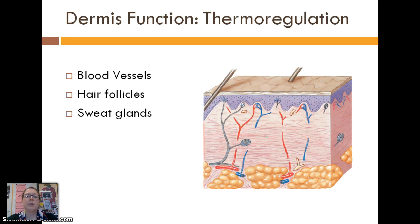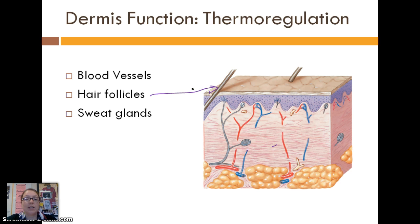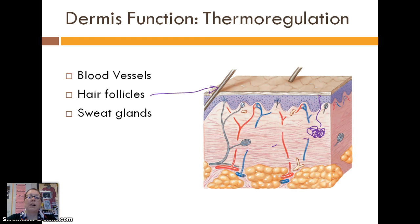The next function of the dermis is thermal regulation, and there are three structures that relate to this. The first, which should be fairly obvious, are hair follicles — they help to thermally regulate and keep us warmer. The second are sweat glands; I'm going to add a sweat gland into this skin diagram. They look like a ball of squiggles that go up to the surface, and they obviously produce sweat to cool us down.